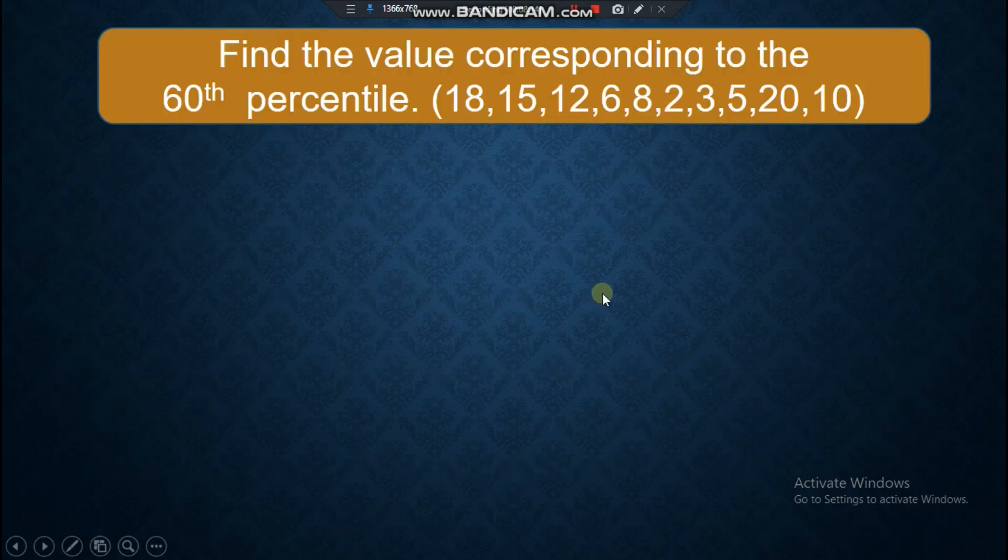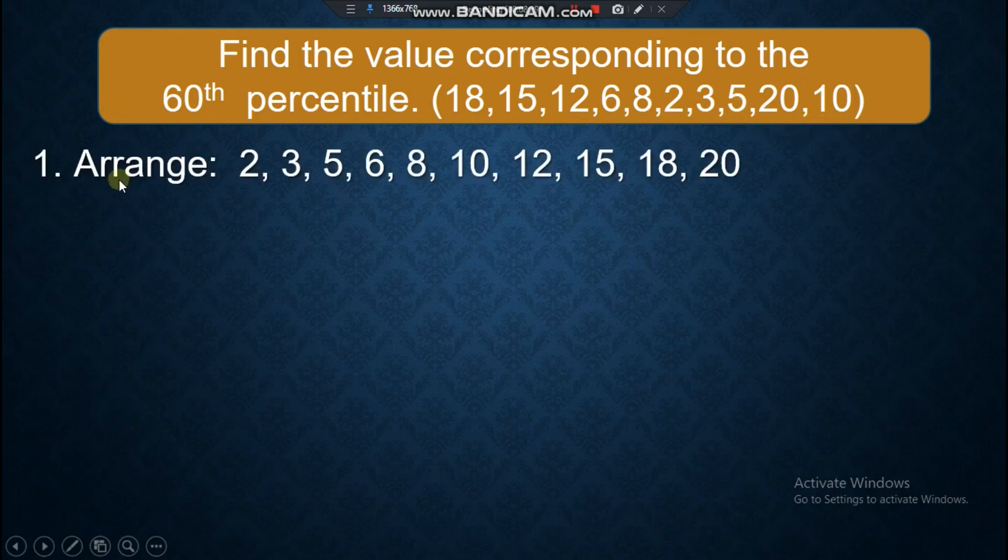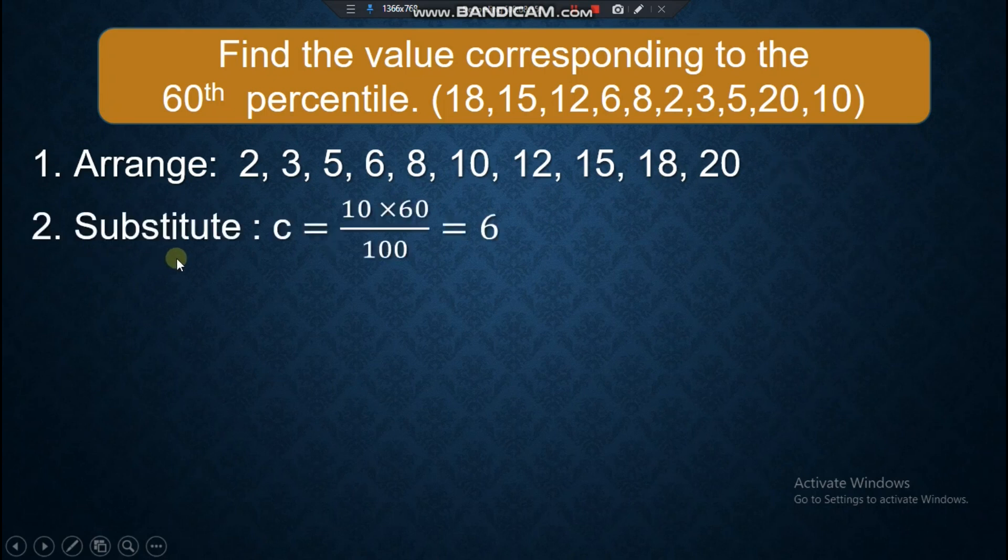Let's have another example. Find the value corresponding to the 60th percentile given the data 18, 15, 12, 6, 8, 2, 3, 5, 20, and 10. First, you arrange the data in ascending order. Second, you substitute. C is 10 times the percentile, which is 60, over 100, and that is 6.